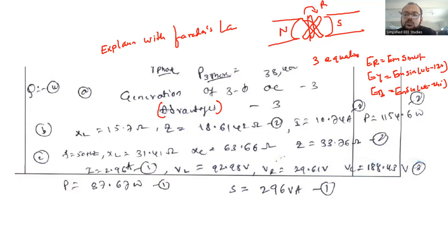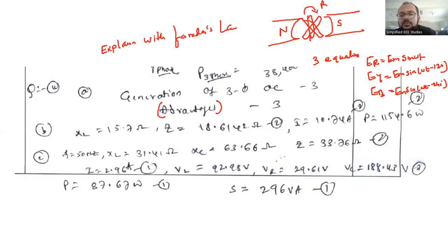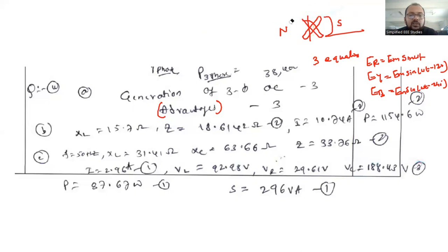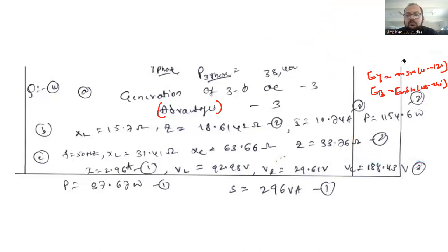Then you have to mention the advantages: less number of conductors can be used; it is suitable for high power applications and three-phase system is economical; losses are less compared to single-phase; usage of conductors can be saved. Also, three-phase induction motors are self-starting, whereas single-phase induction motors are non-self-starting. Explain with neat diagrams to get full score.